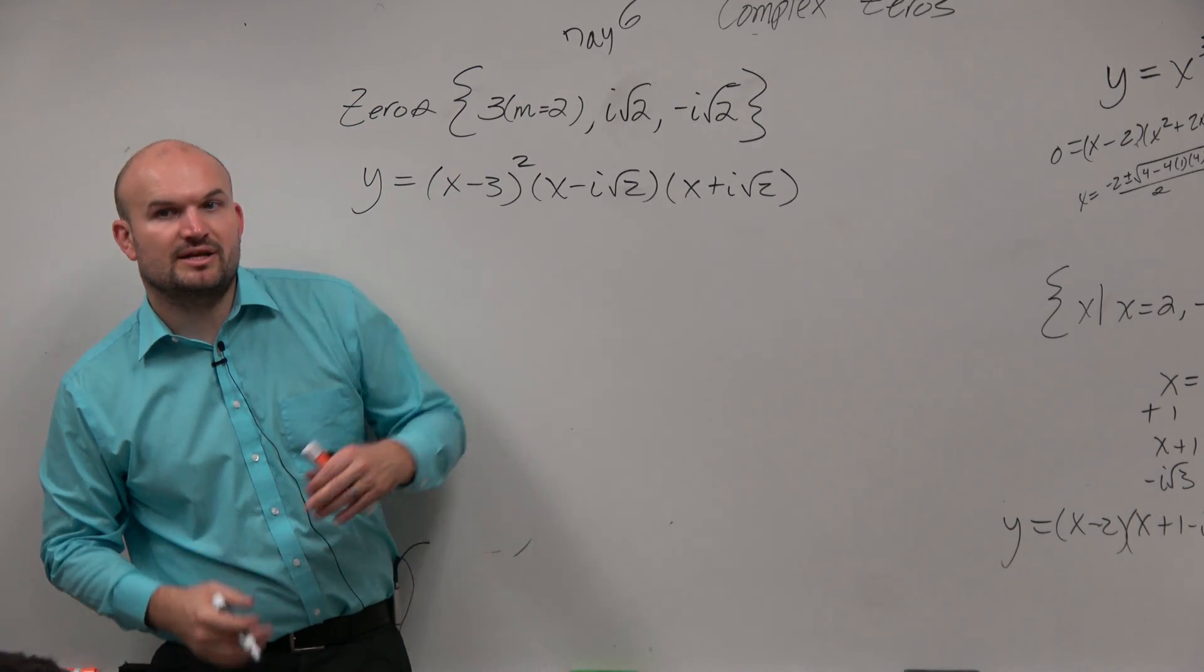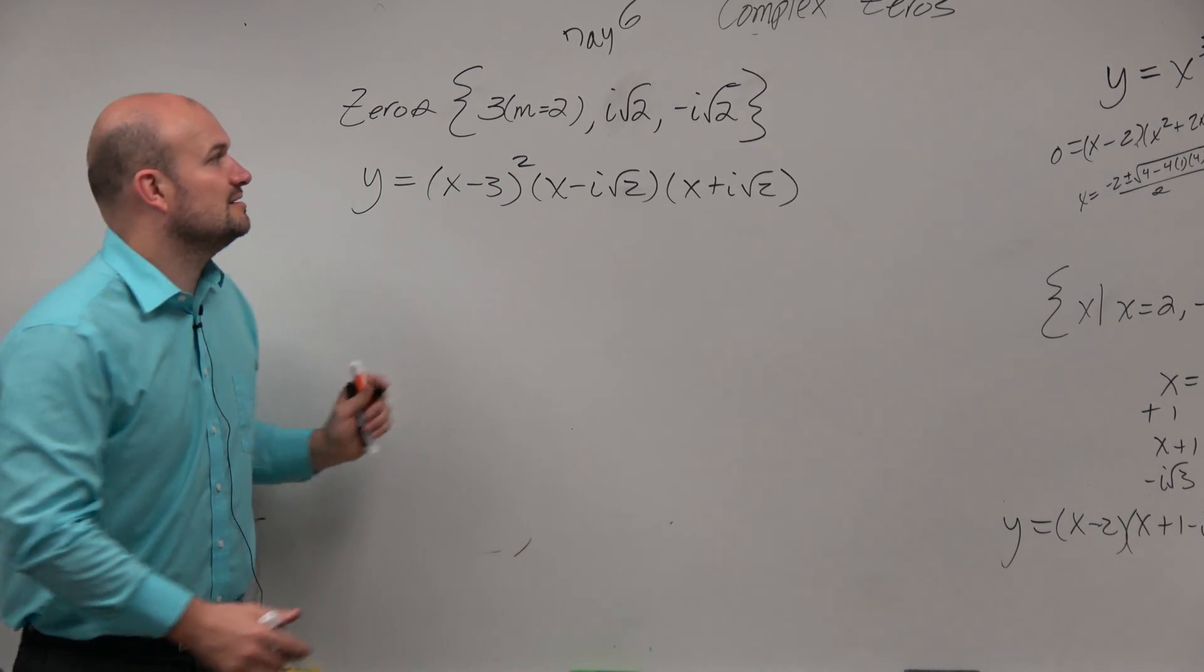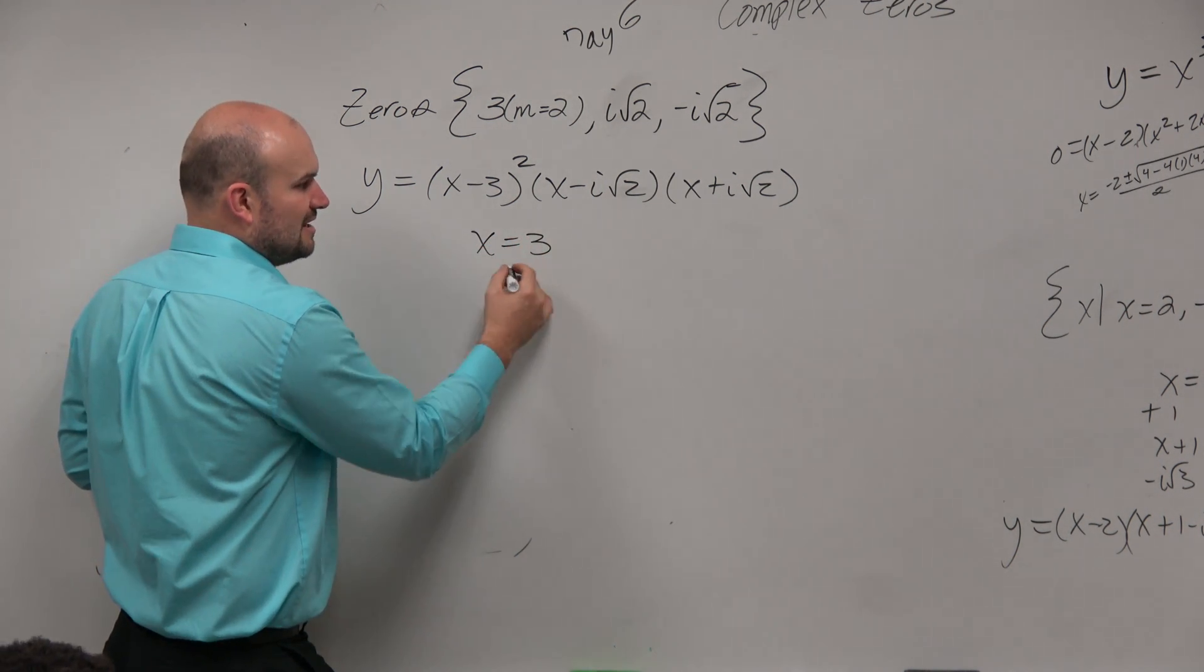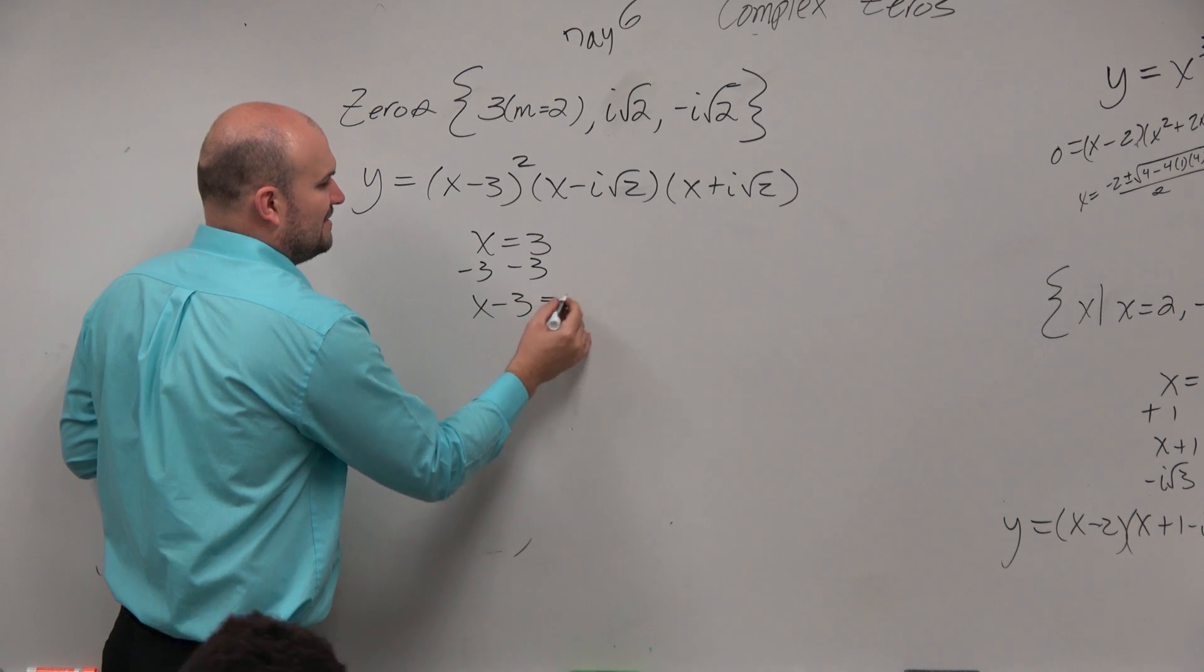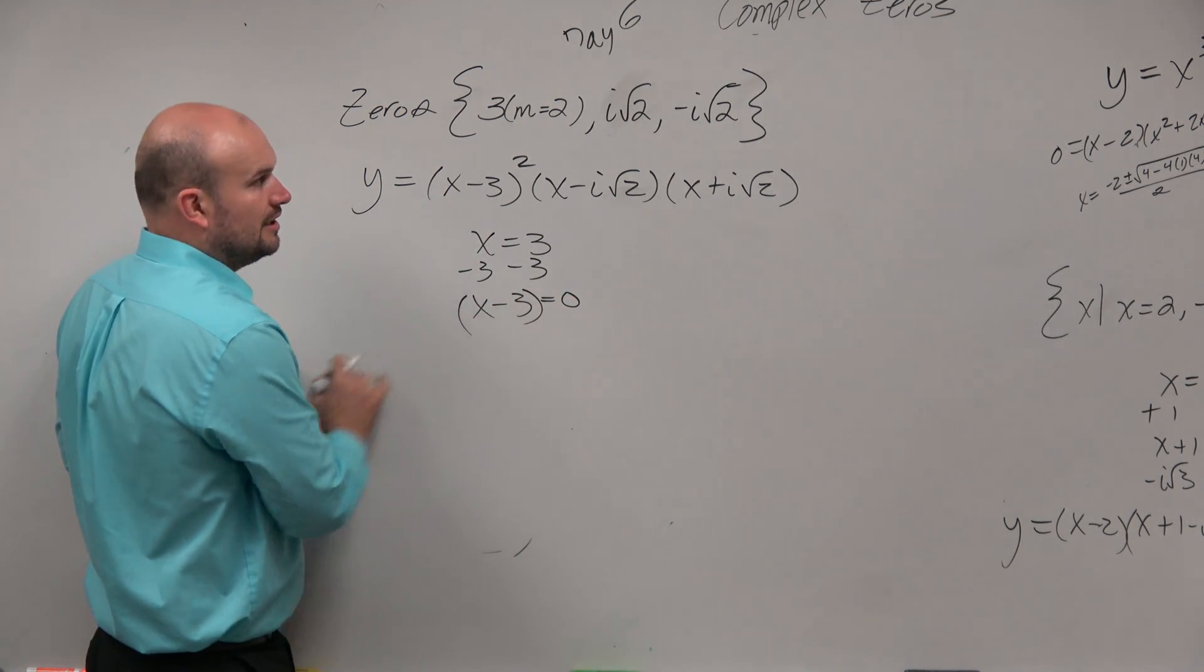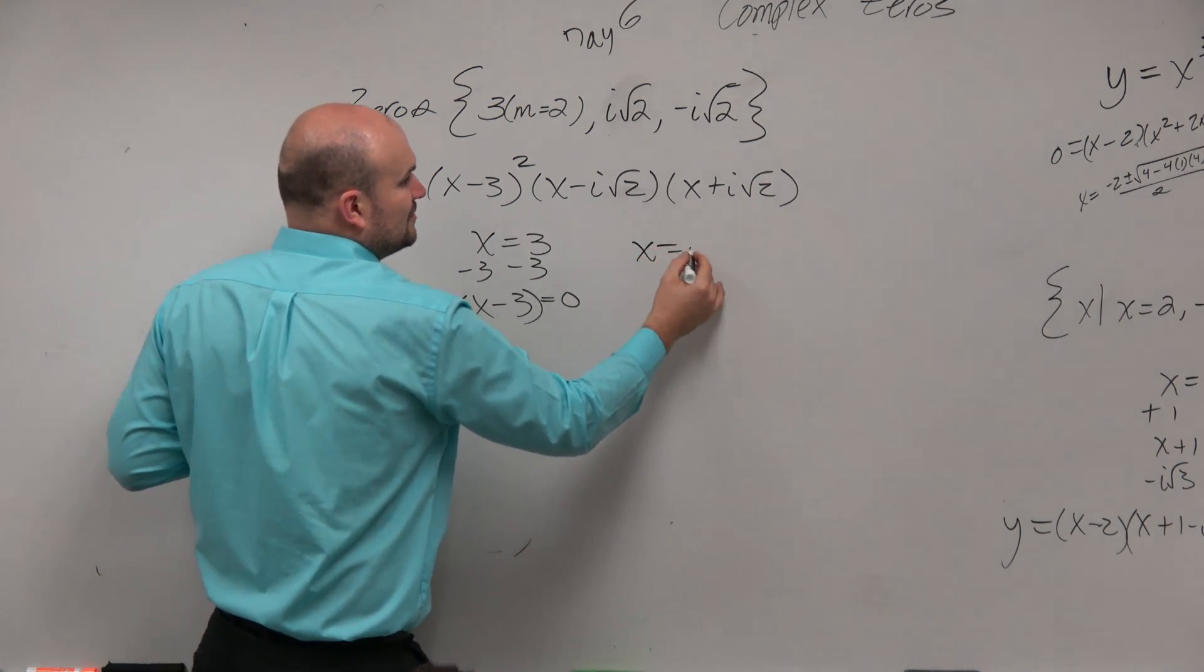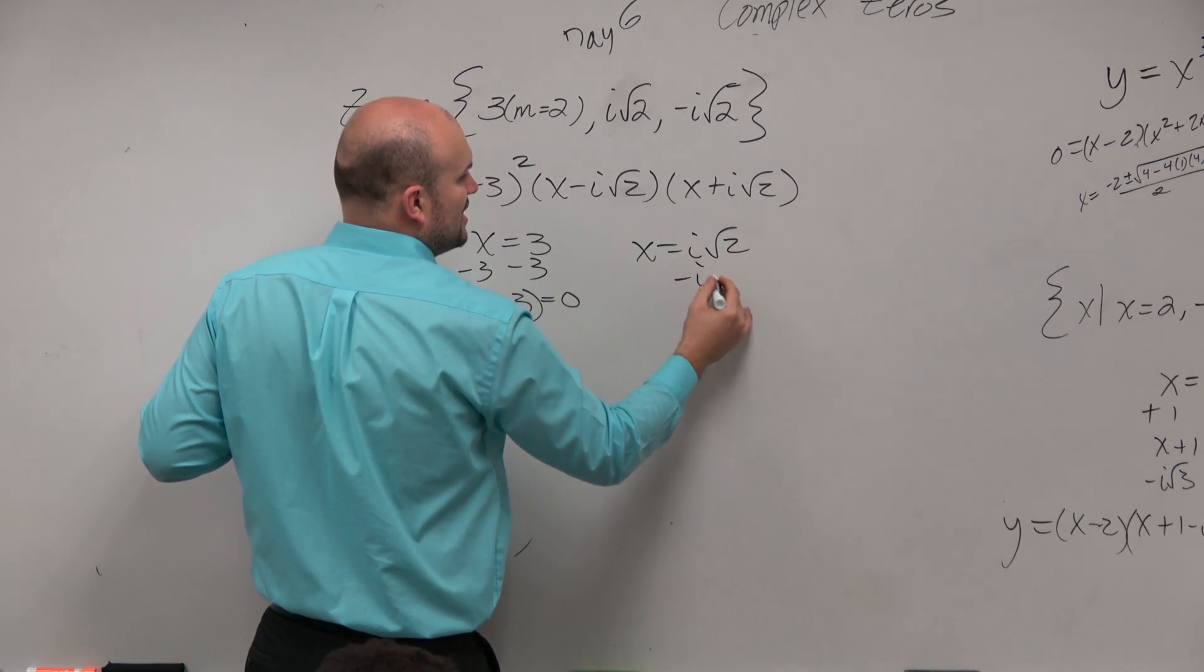Is everybody OK with how I get from there to there? If not, all you do is set each of yours equal to x, and then set them equal to 0. And then that is your factor. And you just do it with those two as well. OK? x equals i square root of 2, subtract it.